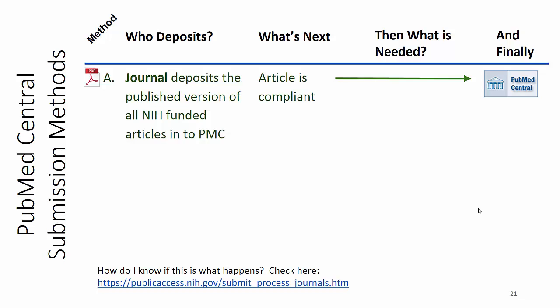The first method goes by very quickly. The journal most likely is a 100% open access journal, and they will deposit that final published version into PubMed Central. The article is compliant, it's in PubMed Central, and everything's done.